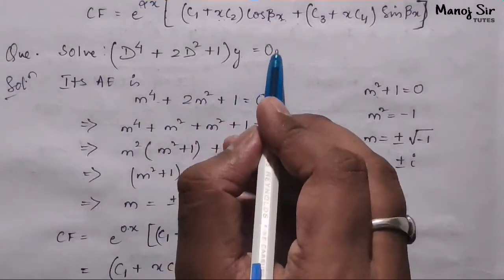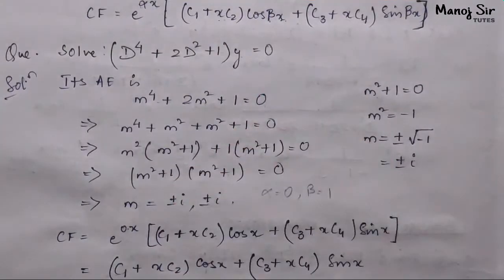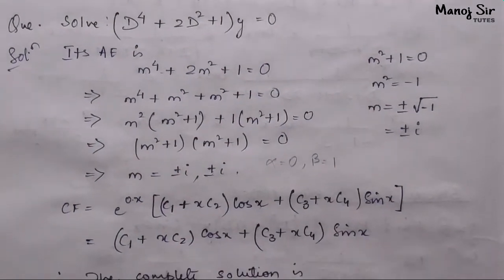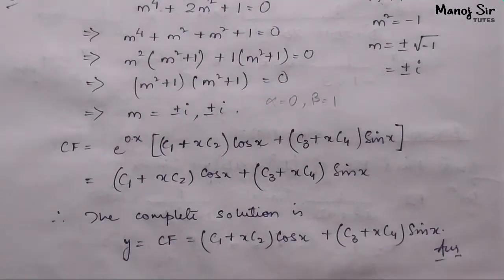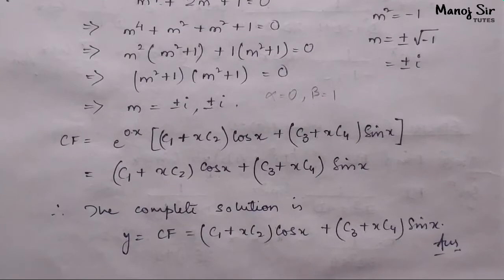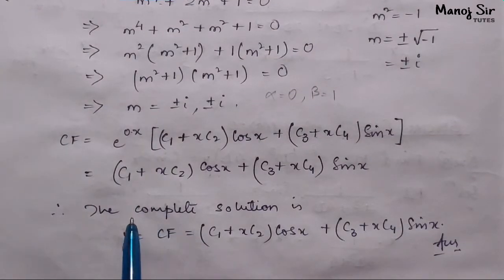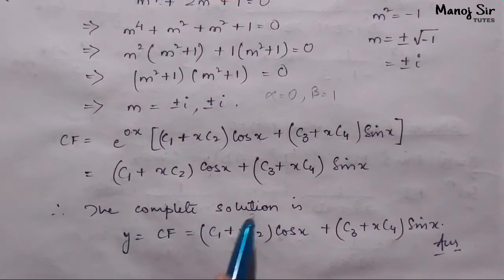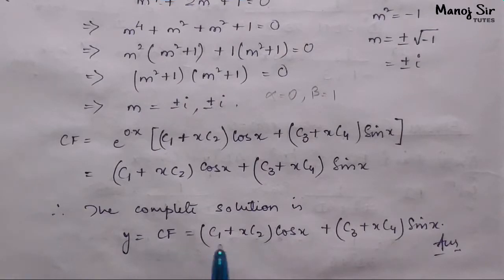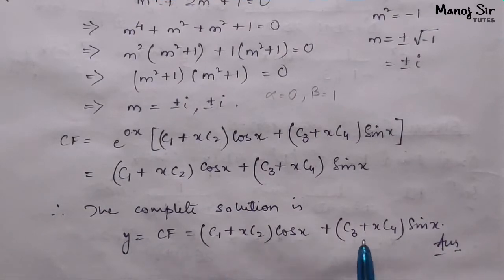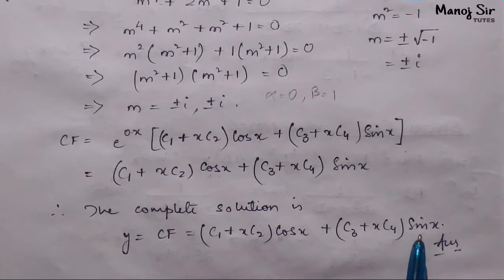Since the right-hand side is zero, the complete solution is just the complementary function: y = (c1 + x·c2)·cos(x) + (c3 + x·c4)·sin(x).